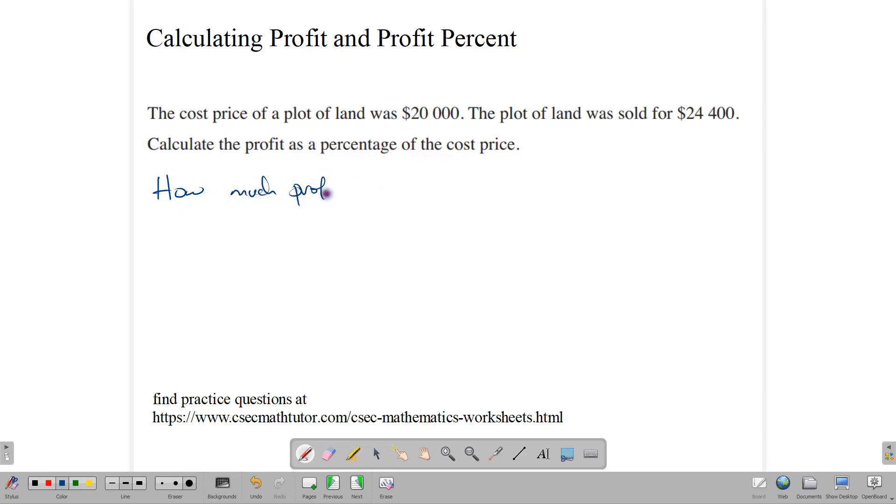The selling price is $24,400, and the cost price is $20,000. So $24,400 minus $20,000 gives us $4,400, and this is our profit in terms of dollars.